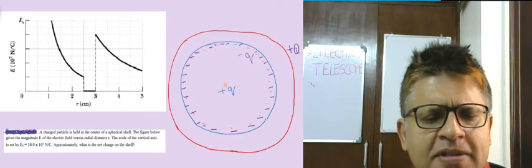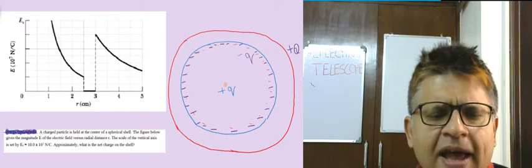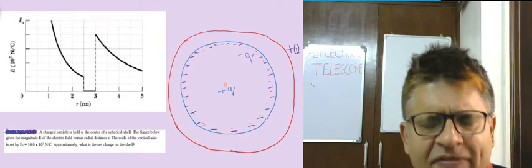Now if you look into the graph, you can see the graph actually represents electric field and it is falling down, and then it becomes zero from 2.5 to 3, and then 3 onwards it again falls down.